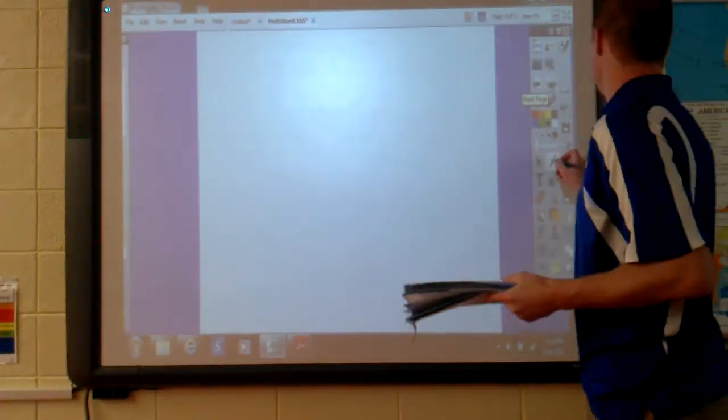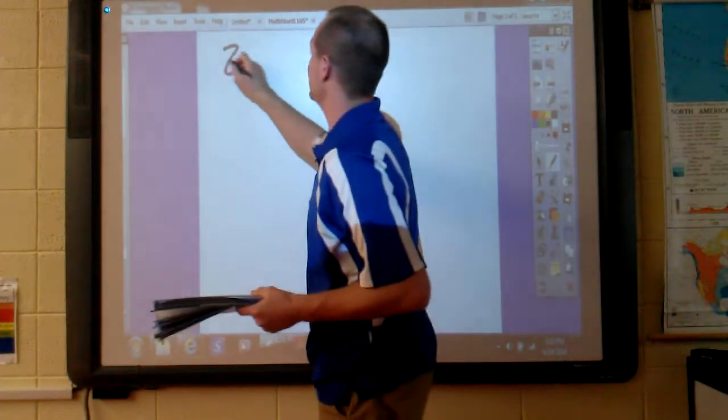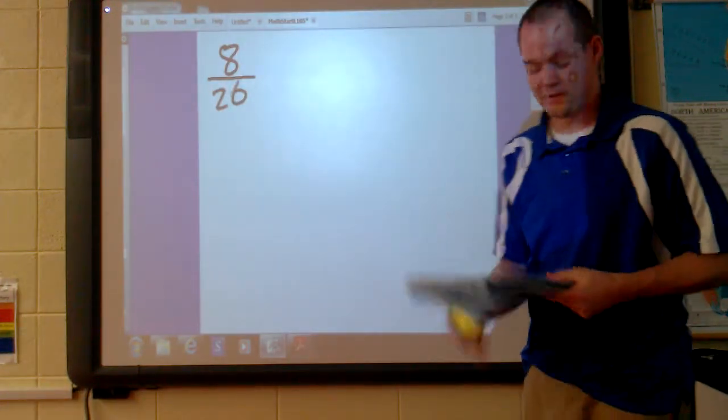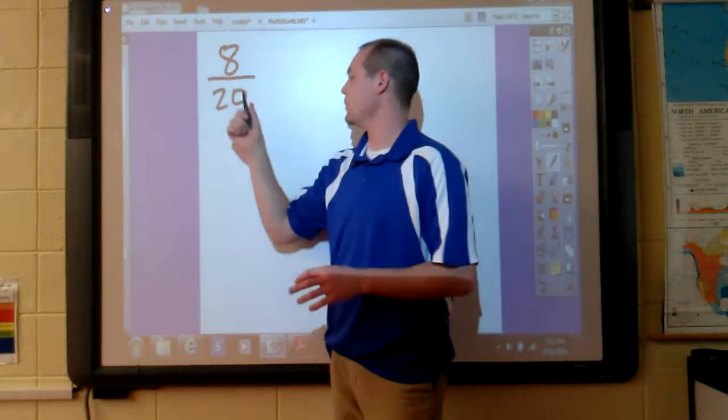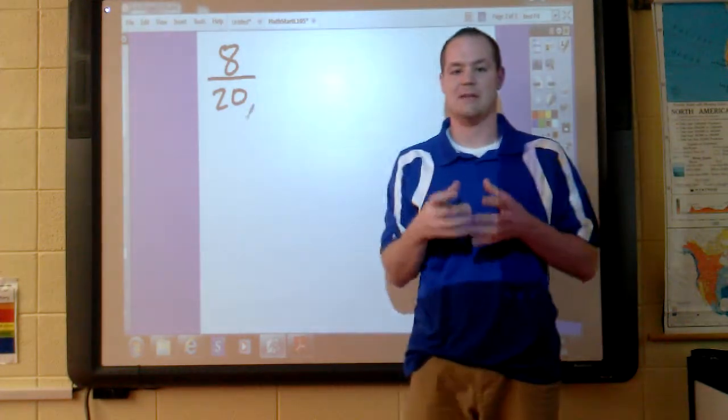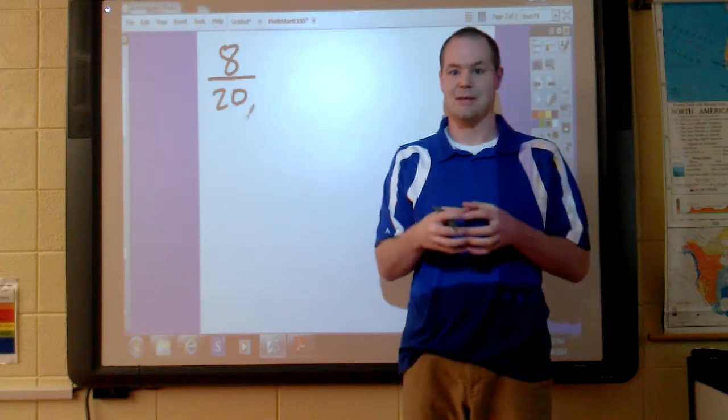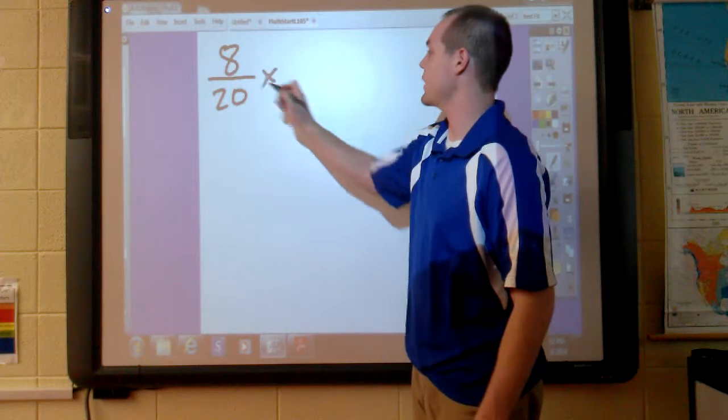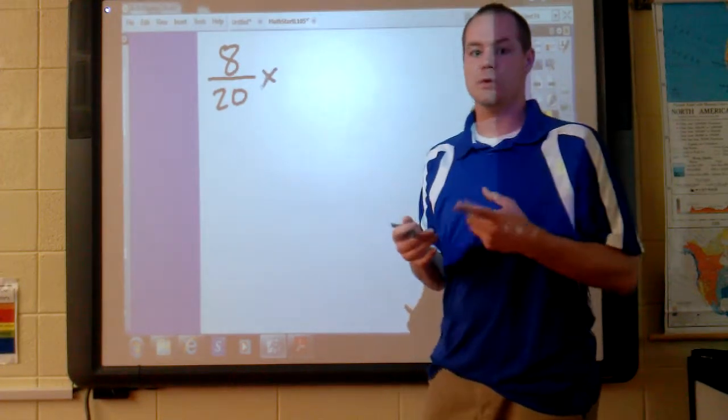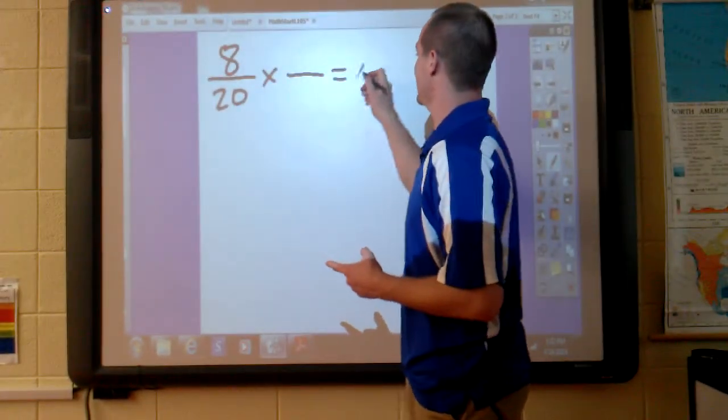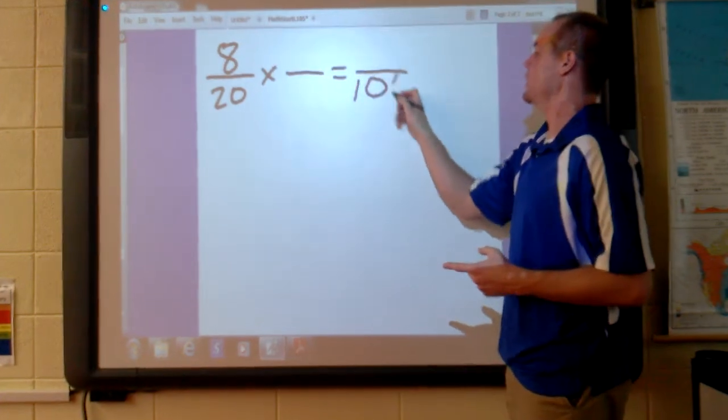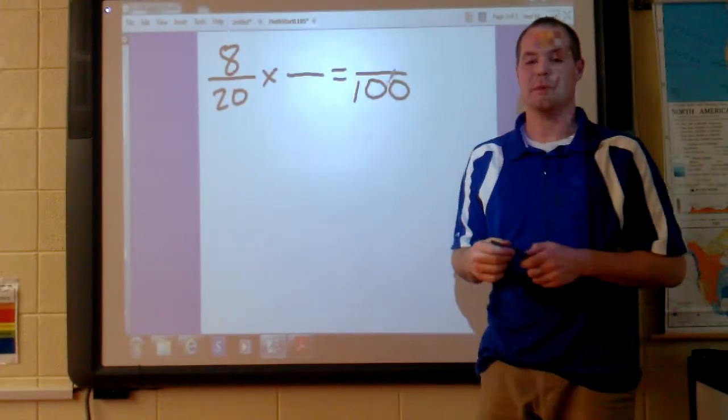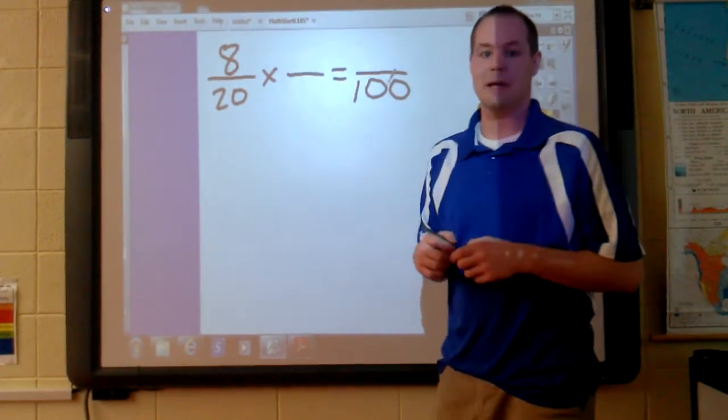Example 1 says, if 8 out of 20 students are boys, what percent of the students are boys? To get from a fraction that doesn't have a denominator of 100 to a percent, we need to get it to a denominator of 100. We do that by multiplying this fraction by a fraction equal to 1, and we know that our denominator needs to be 100. When it is 100, the top number will be our percentage, and we've talked about that a little bit already.